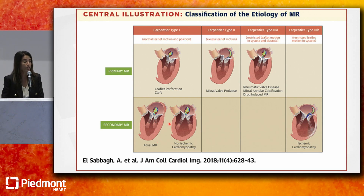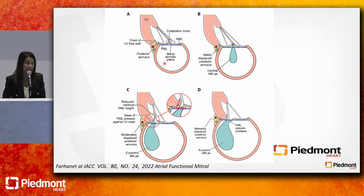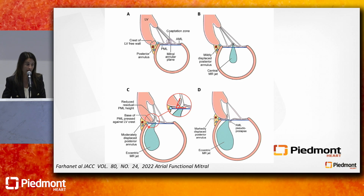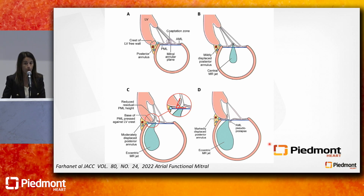Atrial MR was typically called idiopathic by Valentin Fuster, but it is a real entity. When you look at a normal mitral valve, the leaflets are flush with the valve plane. With atrial arrhythmias or AFib, remodeling of the atrium causes the posterior annulus to move first, and over time the annulus expands, with leaflet tethering along the LV crest leading to pseudo-prolapse. There is data showing that putting these patients in sinus rhythm reduces MR and improves symptoms, and restrictive annuloplasty and TEER may also be options.